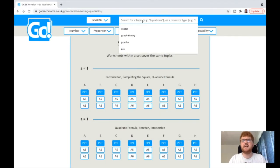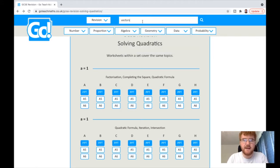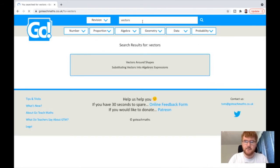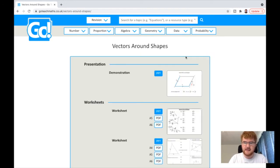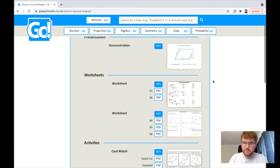Last of all, let's try the search bar. Say I want to practice my vectors. Let's put in vectors. We've got vectors around shapes and substituting vectors into algebraic expressions. Vectors around shapes is a typical GCSE topic. Let's click on that. And it takes you through to a demonstration like we saw previously.